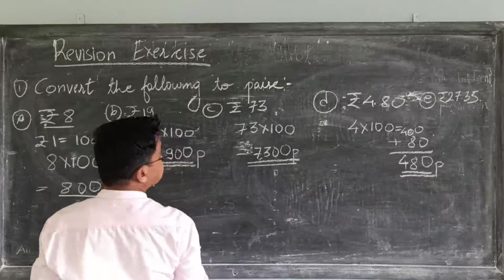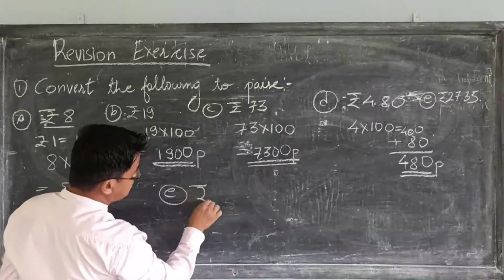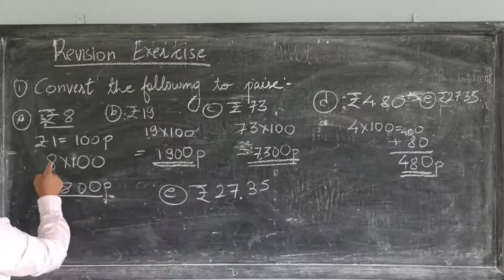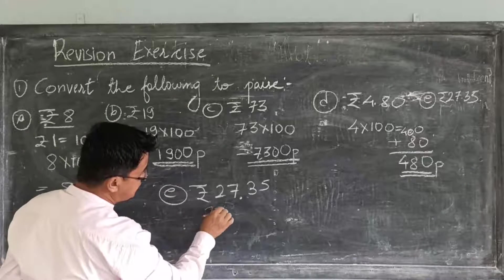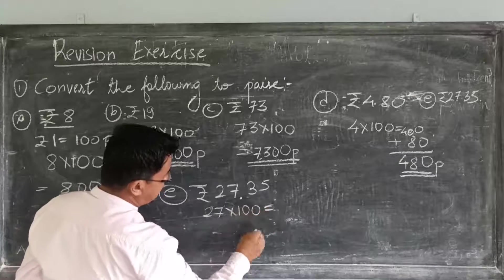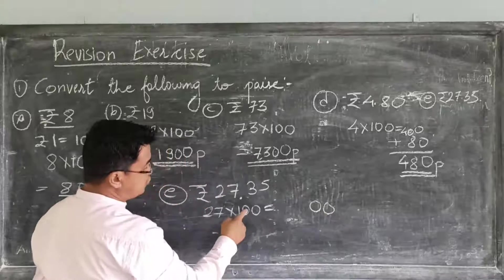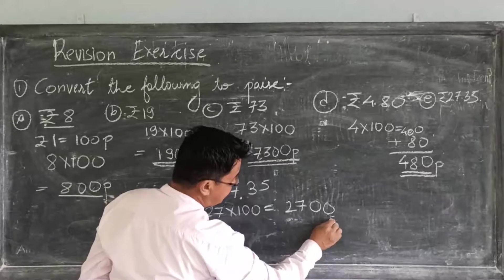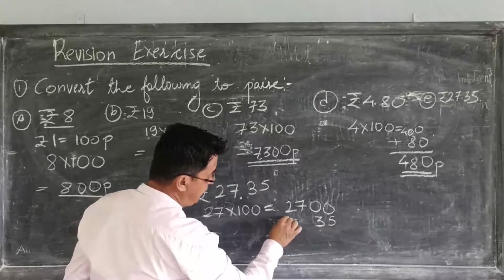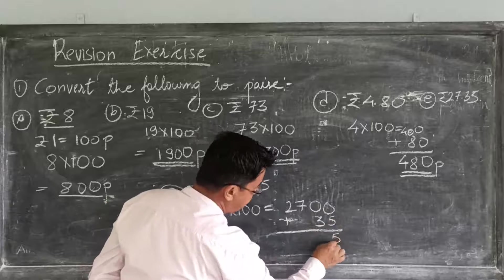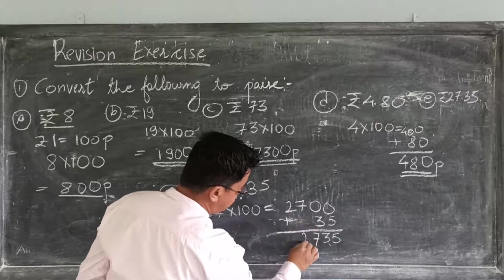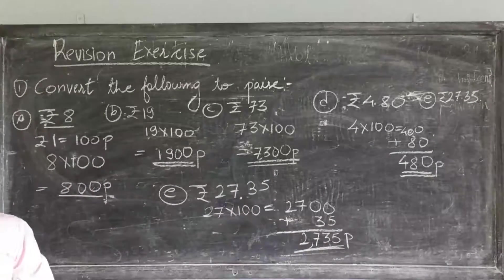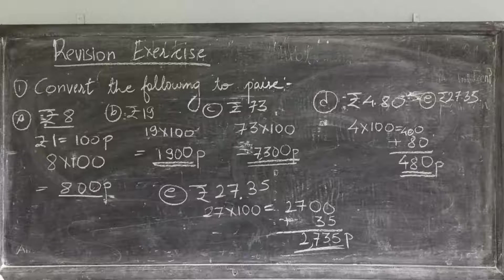Now, E. I will write it here. E is rupees 27 and 35 paise. We know that 1 rupee is equal to 100 paise. Rupees 27 is equal to 27 into 100, which is 2700. Plus 35 paise. Adding them together: the answer is 2735 paise. This is how you convert rupees into paise.